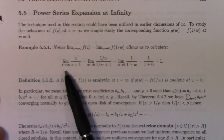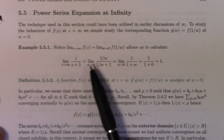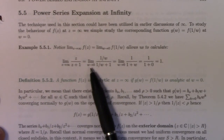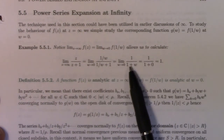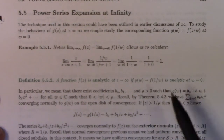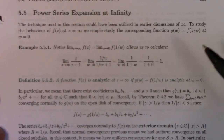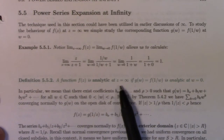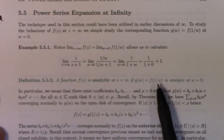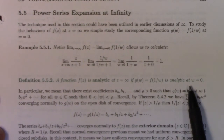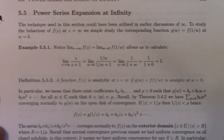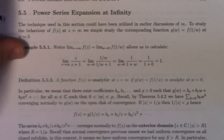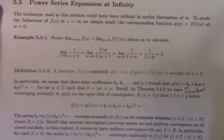We replace z with 1 over W and W goes to 0. By algebra, that gives us that — just a sample calculation of the idea. Here's the definition: a function f of z is analytic at z equals infinity if g of W equals f of 1 over W is analytic at W equal to 0. This is an important idea because in chapter 6 we'll study what are called Laurent series, and this idea is going to be necessary to completely understand what's going on there.